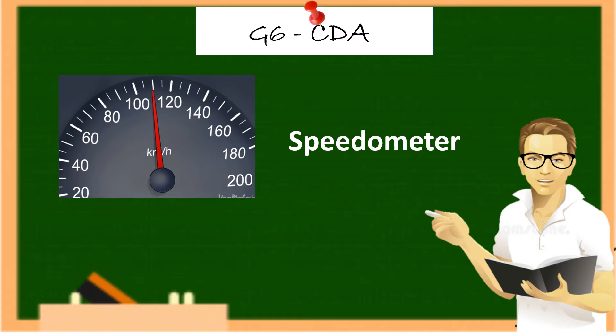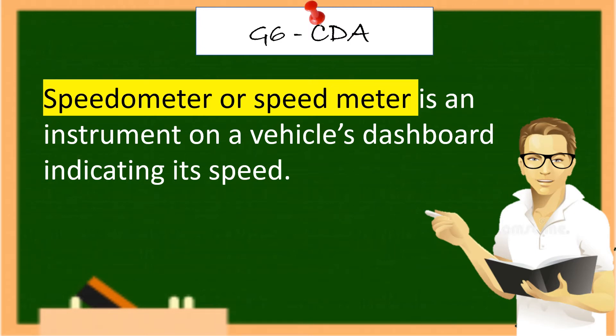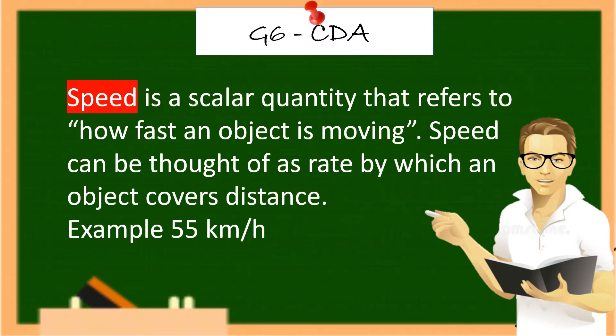Speedometer or speedmeter is an instrument on a vehicle's dashboard indicating its speed. Speed is a scalar quantity that refers to how fast an object is moving. Speed can be thought as a rate by which an object covers distance. Example, 55 kilometer per hour.